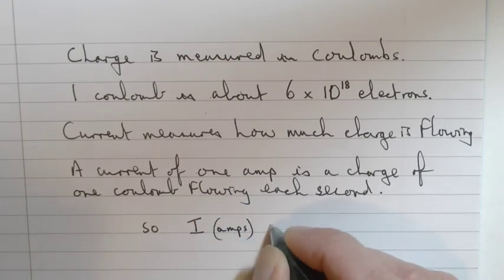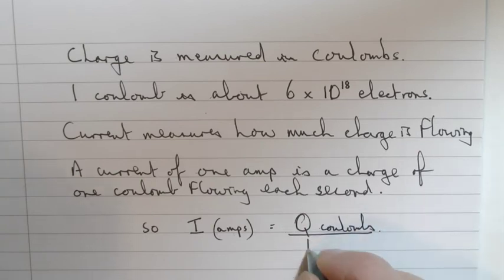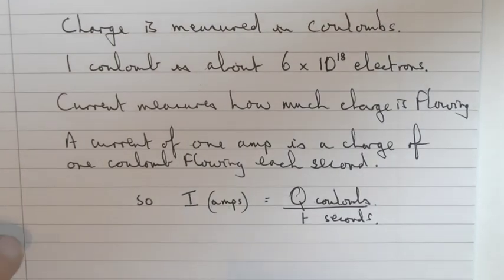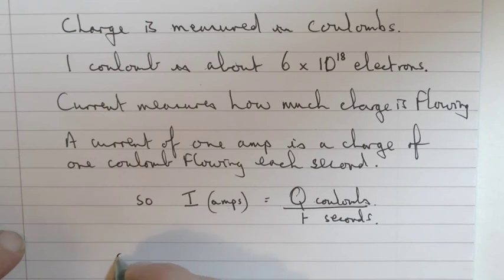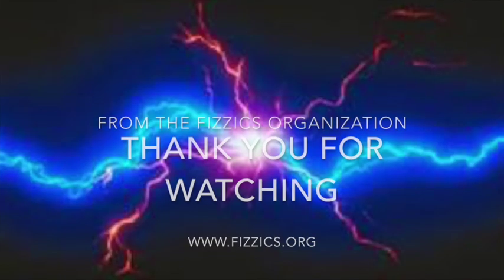Current therefore as an equation: current in amps is the amount of charge flowing in coulombs divided by the time it takes in seconds. The equation is sometimes more useful the other way around, so we'll write it that the quantity of electricity in coulombs that has flowed is equal to the current in amps multiplied by the time in seconds. So thank you for watching.